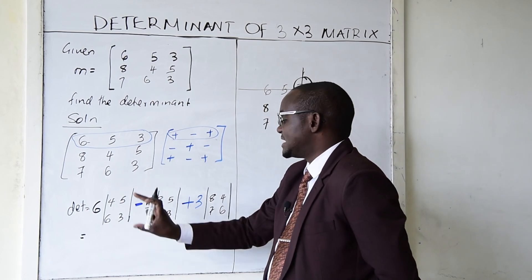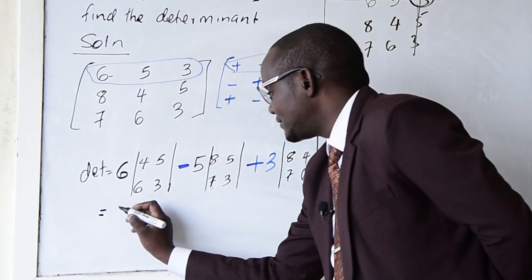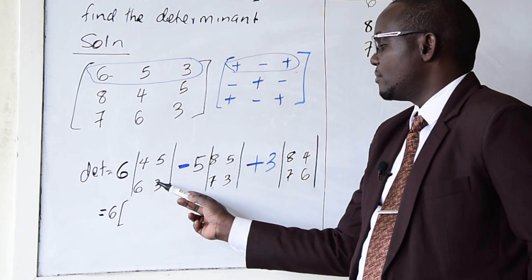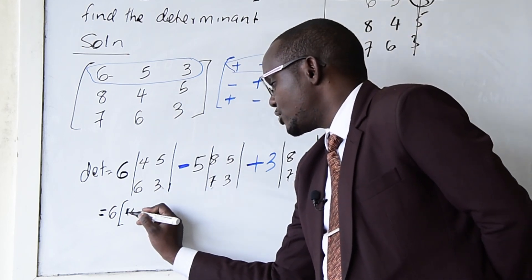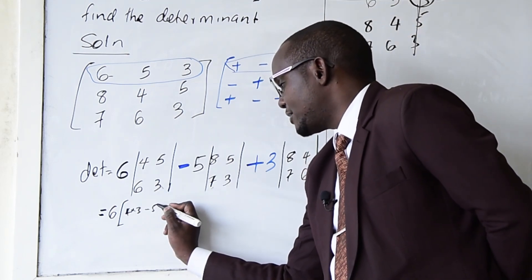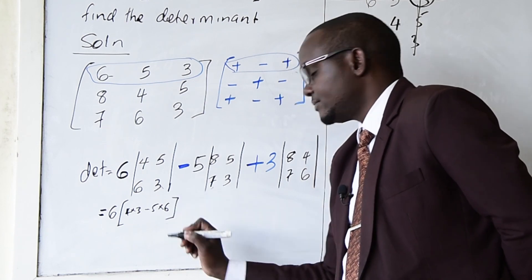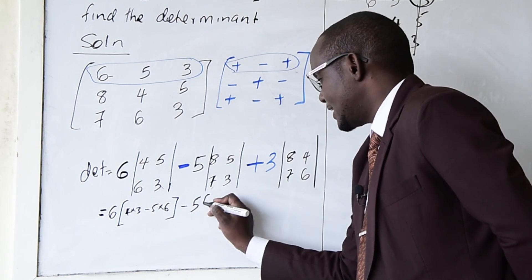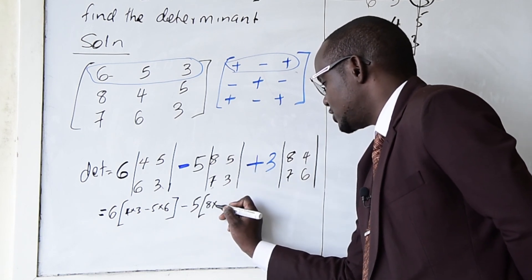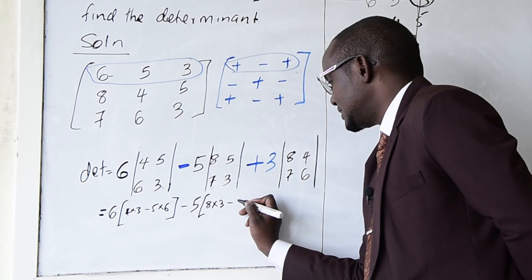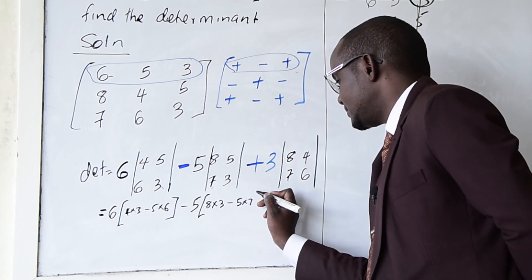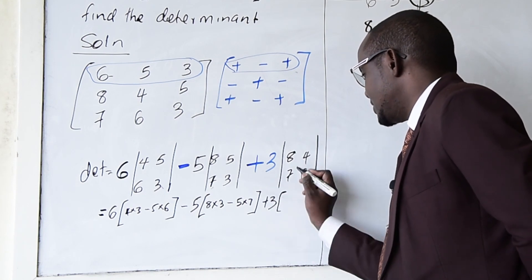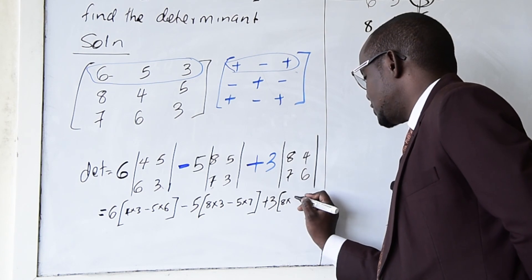Now the determinant is: 6 times (4×3 − 5×6), minus 5 times (8×3 − 5×7), plus 3 times (8×6 − 4×7).